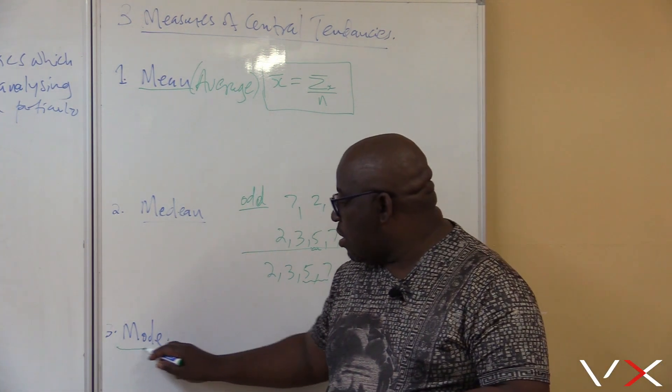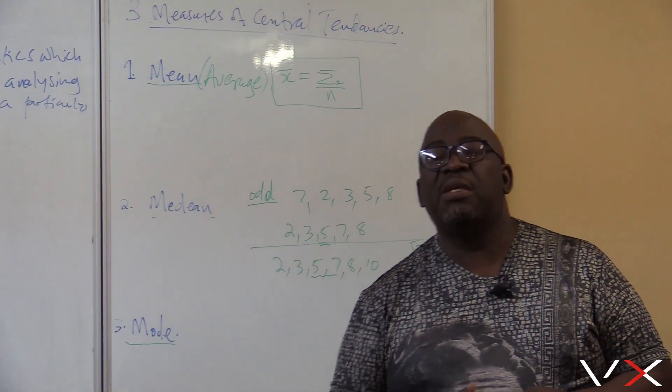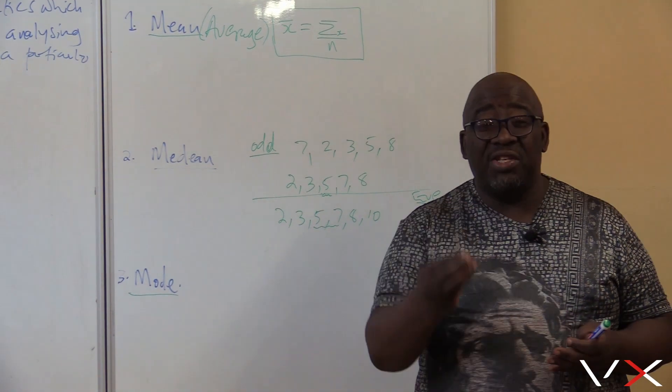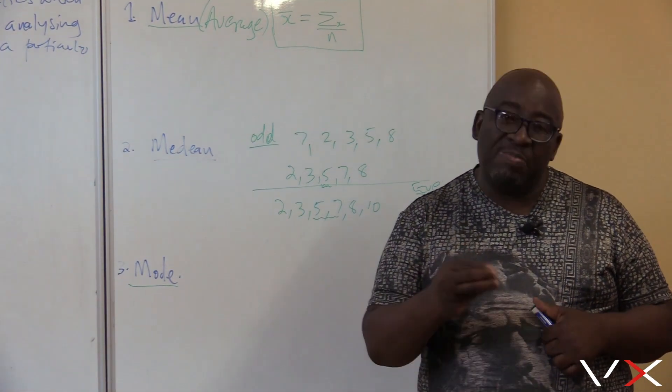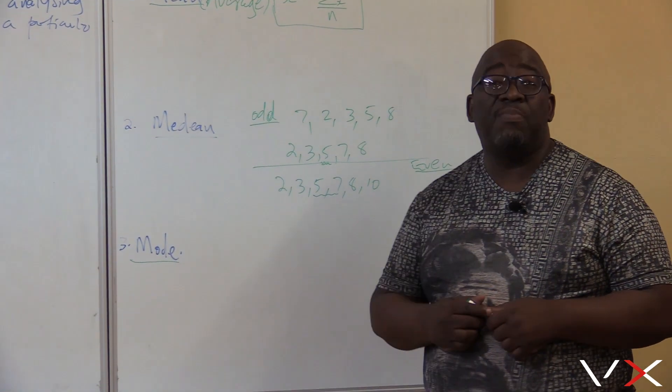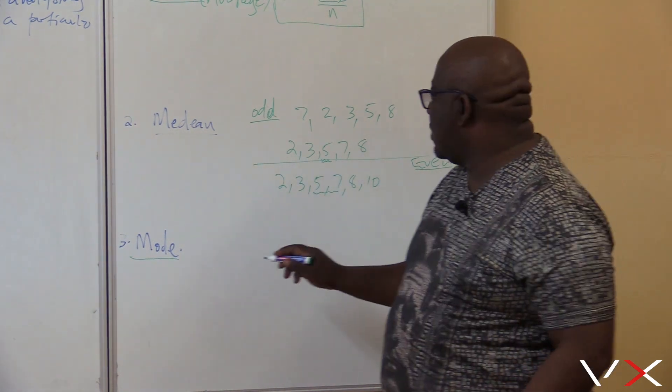Let me move on to the third measure of central tendency, which we call the mode. What is the mode? A mode is the observation that appears the most in that particular data. A mode is the observation that appears the most in that particular data.